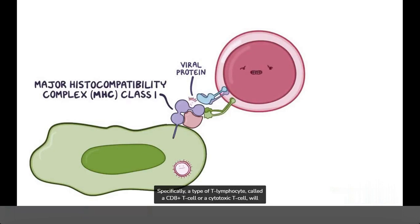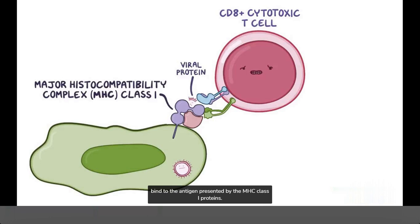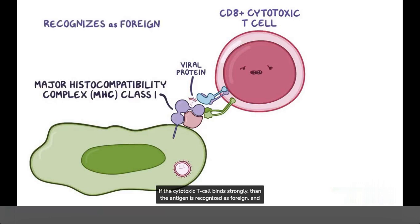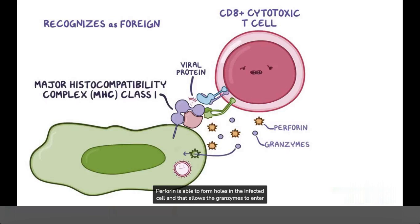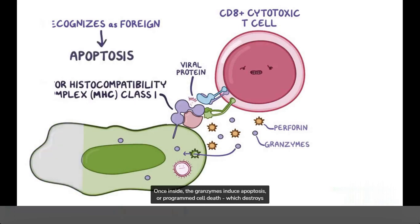Specifically, a type of T-lymphocyte called a CD8 positive T cell, or a cytotoxic T cell, will bind to the antigen presented by the MHC class 1 proteins. If the cytotoxic T cell binds strongly, then the antigen is recognized as foreign, and the cytotoxic T cell secretes inflammatory molecules and enzymes, like perforin and granzymes. Perforin is able to form holes in the infected cell, and that allows for the granzymes to enter it. Once inside, the granzymes induce apoptosis, or programmed cell death, which destroys the cell.